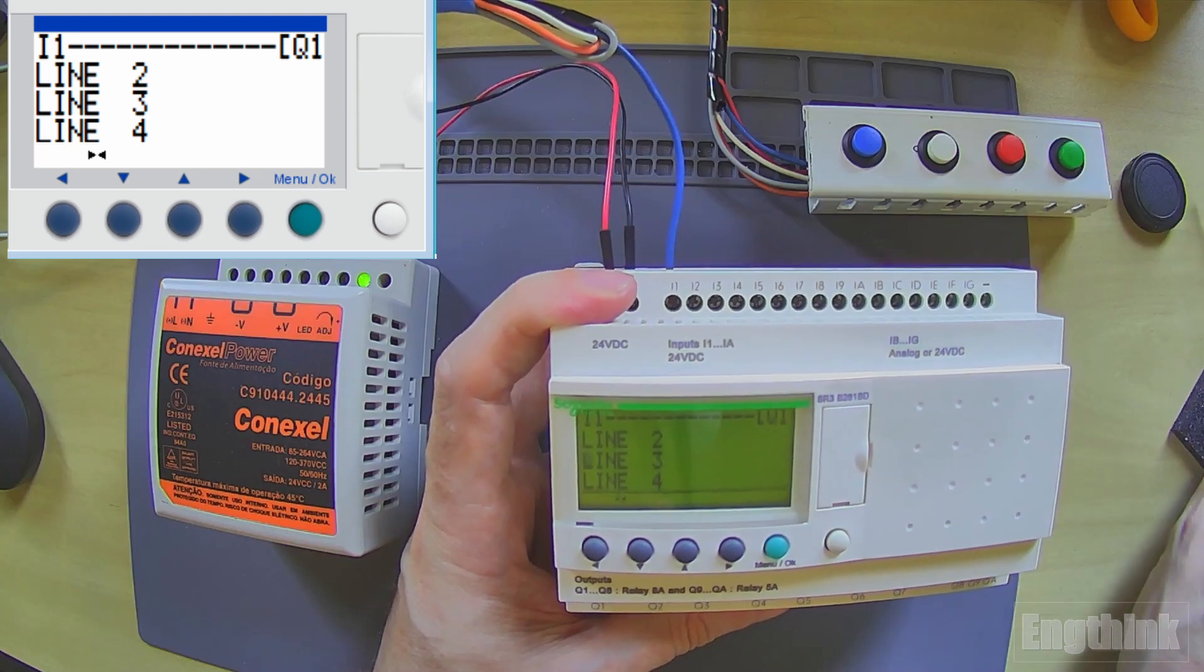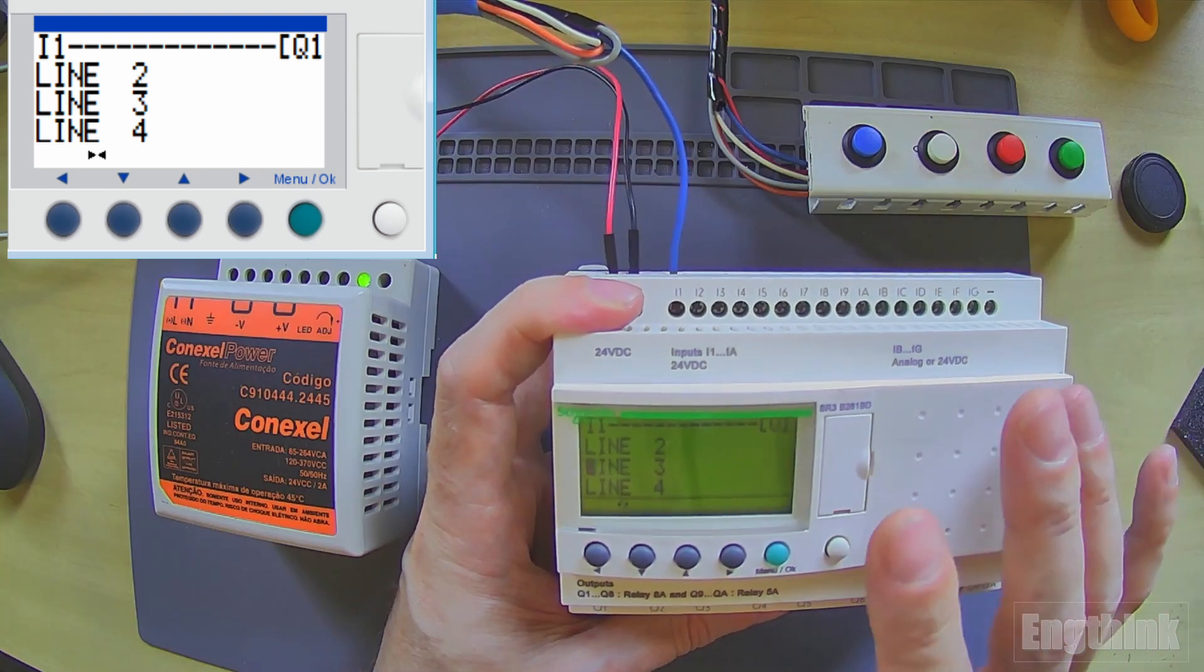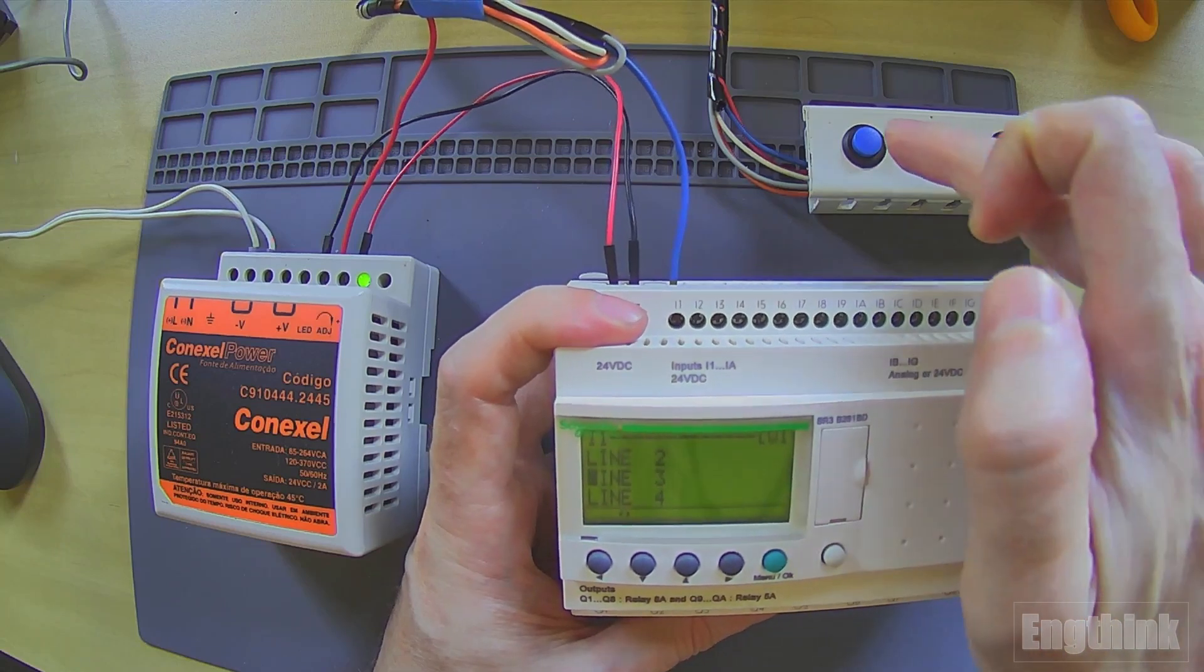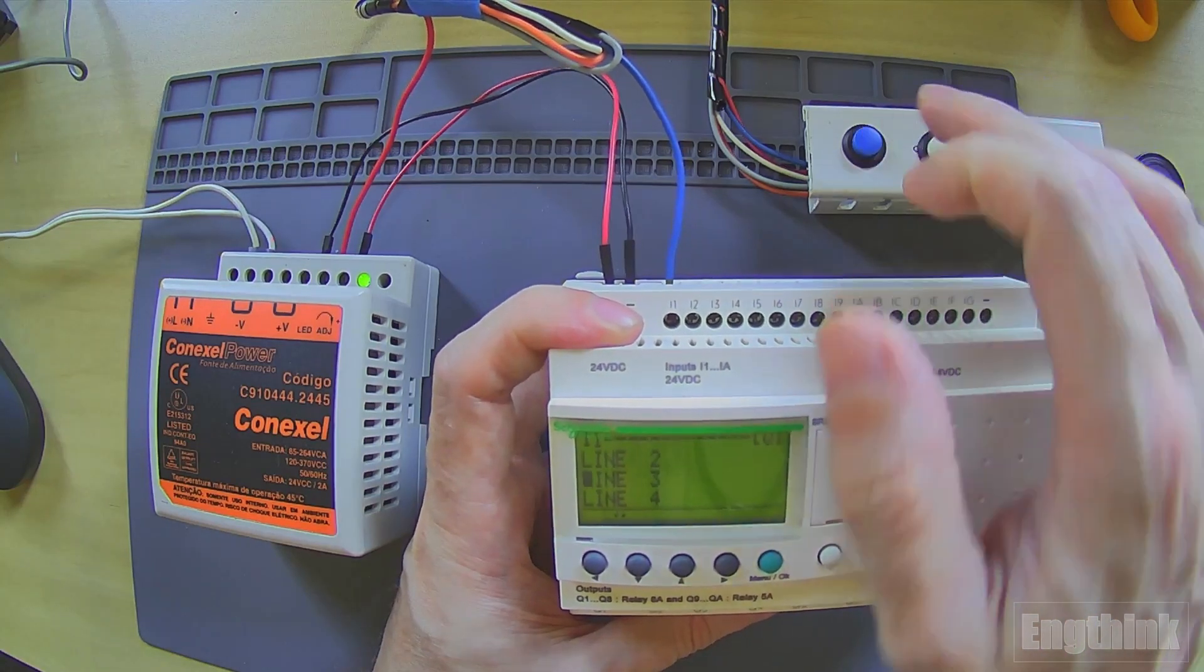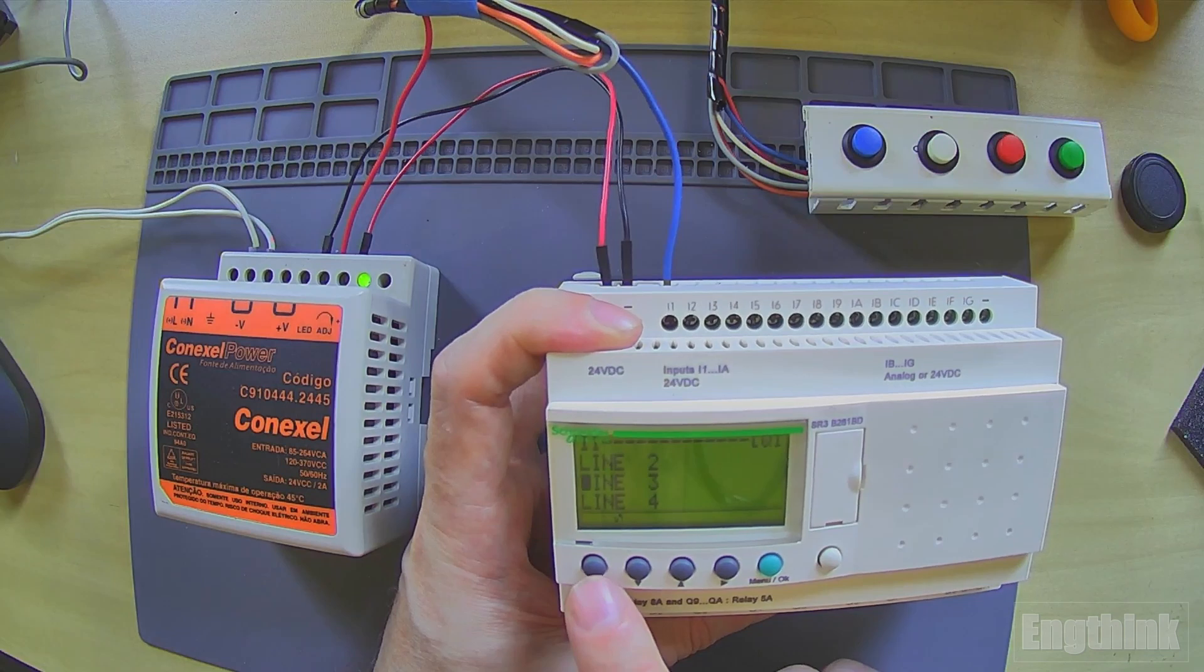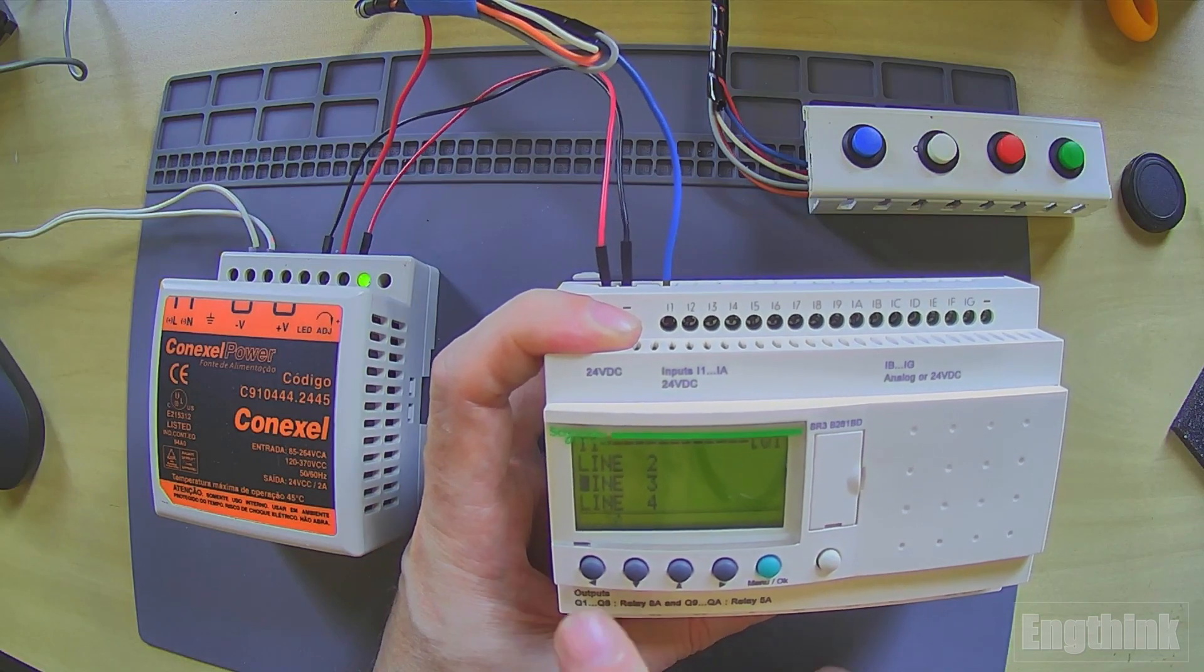This is a very simple program. Our objective is to replace this digital input of this button with the first Z key, the Z1 key button.